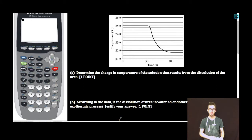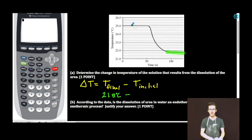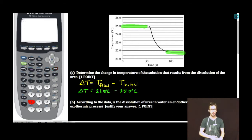Part A: Determine the change in temperature of the solution that results from the dissolution of the urea. Delta T equals final temperature minus initial temperature. Final temperature — watch your scale — 21.8 degrees Celsius minus initial temperature 25.0 degrees Celsius. Delta T is equal to negative 3.2 degrees Celsius.